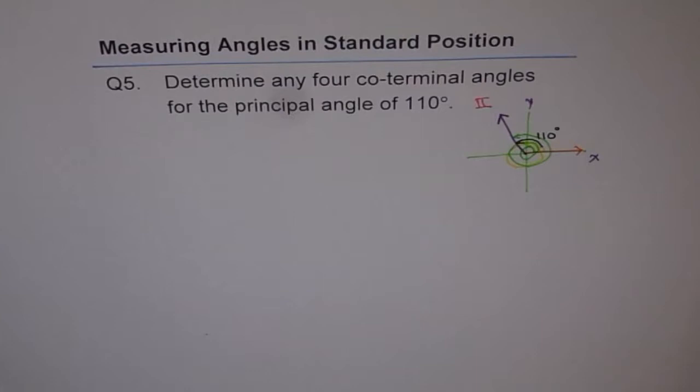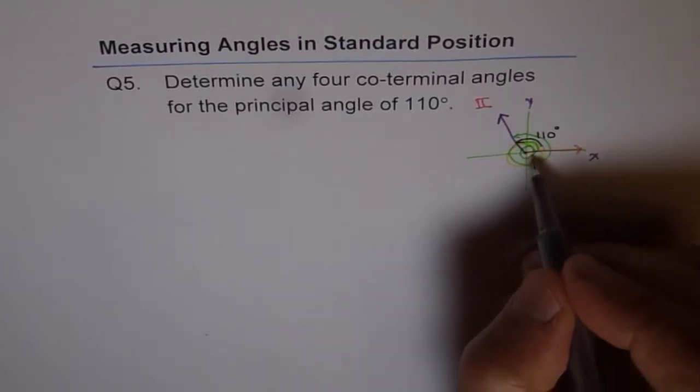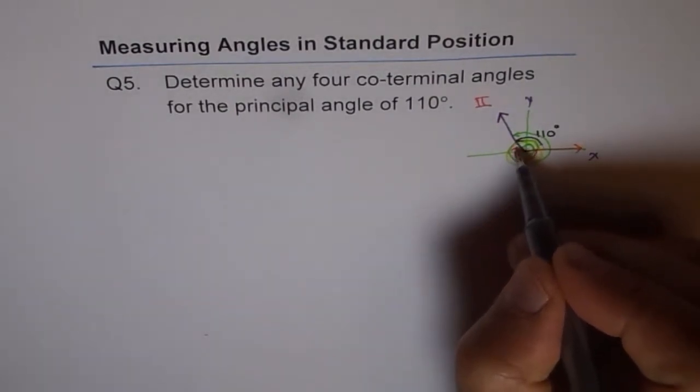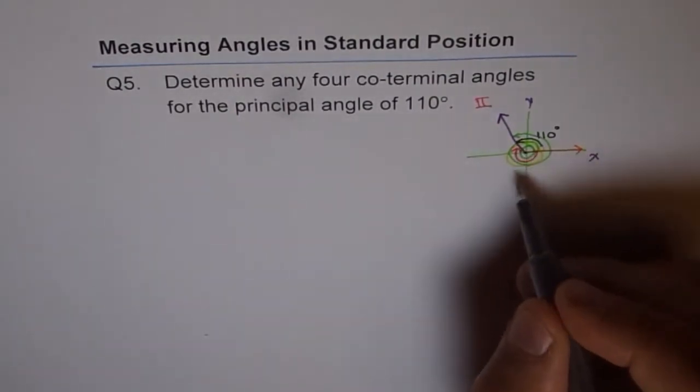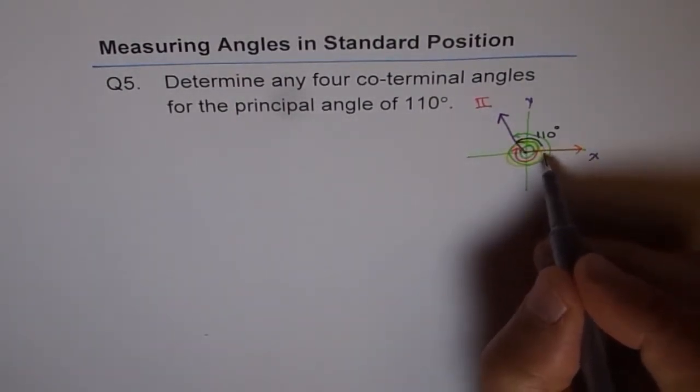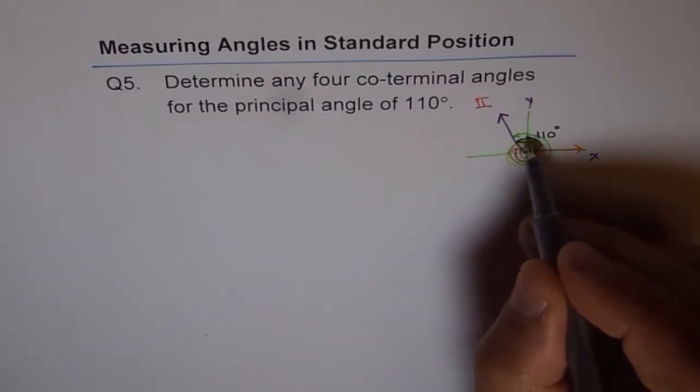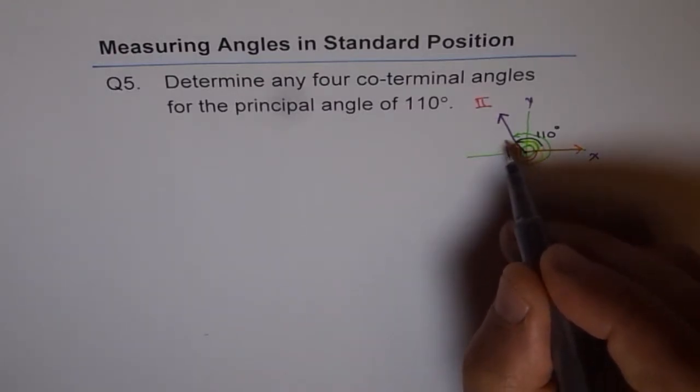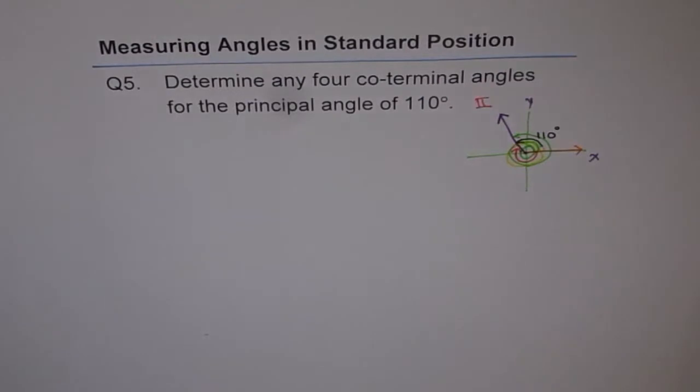The other co-terminal angles which you can find, you can go in one direction also. You can also go like this. That is also a co-terminal angle, but with a negative sign. And then you can go like this, one full round, and then like that. That gives you different co-terminal angles for the given principal angle.